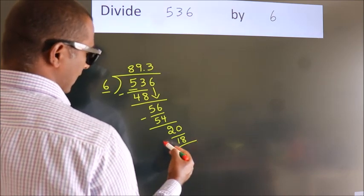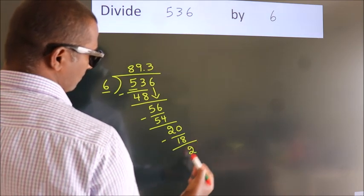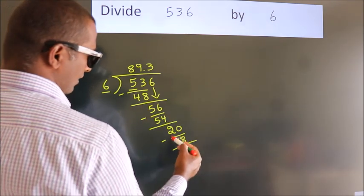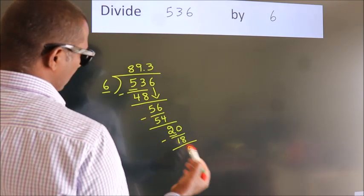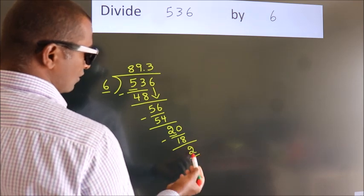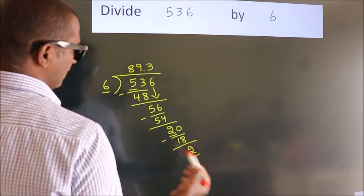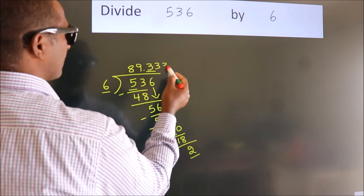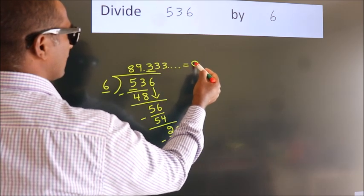Now we subtract. We get 2. Now you observe. We had 2 here, and we got 2 again. That means this number keeps on repeating. So this is our quotient.